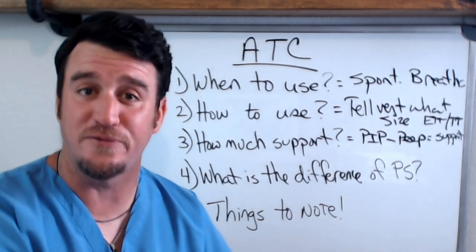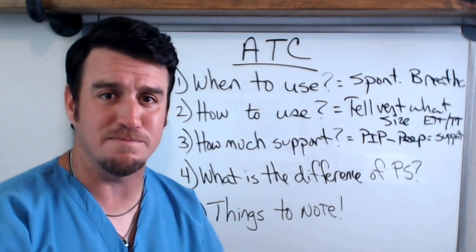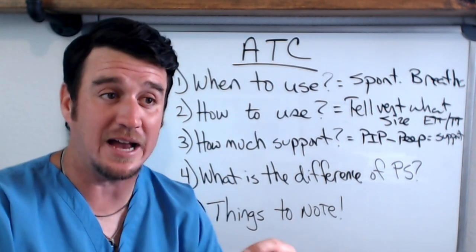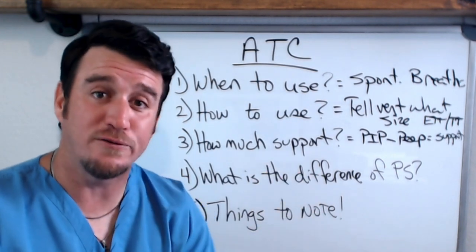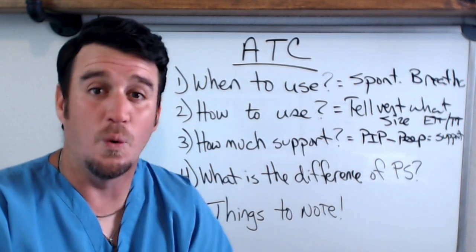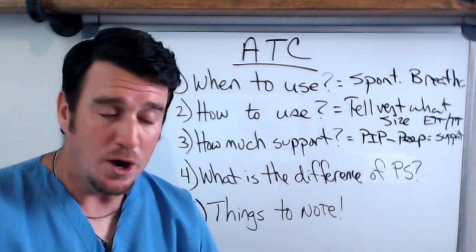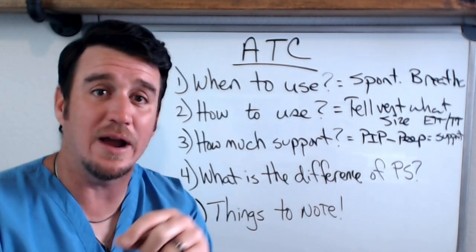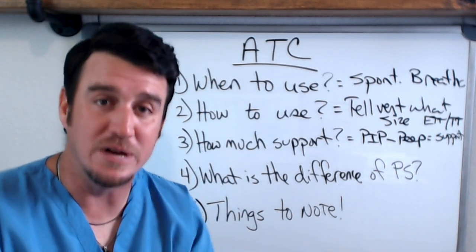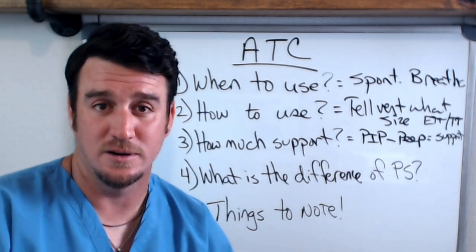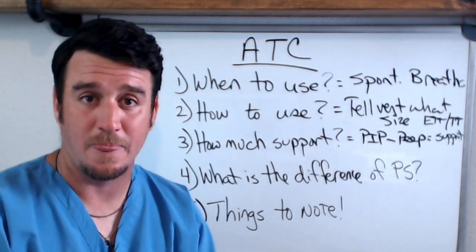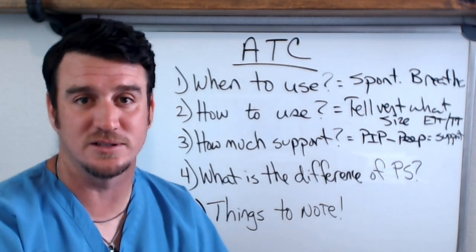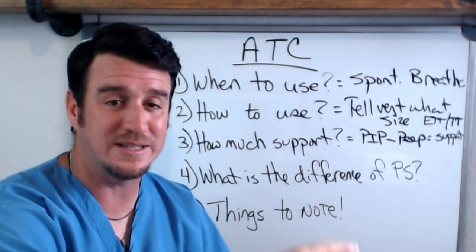If you put a pressure support of 5 on an 8.0 endotracheal tube and another patient has an 8.0 tracheostomy tube also on pressure support of 5, you're actually offering more support to the patient with the tracheostomy tube because they have lower airway resistance from their artificial airway. That pressure support of 5 is not equal across tracheostomy tubes, ET tubes, and various sizes of each, whereas ATC accommodates and is specific to the various sizes and lengths of artificial airways.